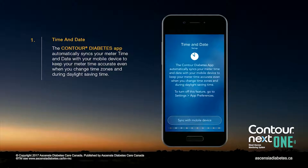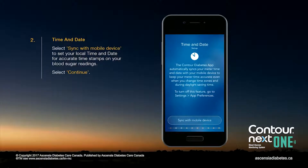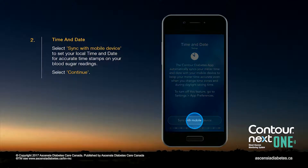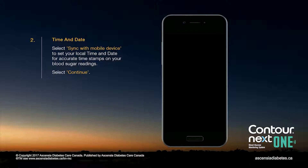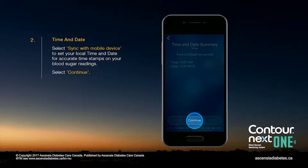The Contour Diabetes app automatically syncs your meter time and date with your mobile device to keep your meter time accurate. Select Sync with Mobile Device to set your local time and date for accurate timestamps on your blood sugar readings. Then select Continue.